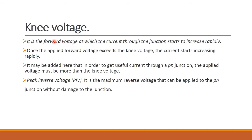Next, knee voltage. It is the forward voltage at which the current through the junction starts to increase rapidly. The main thing to remember is: breakdown voltage is the reverse voltage and knee voltage is the forward voltage. Another important term is peak inverse voltage — it is the maximum reverse voltage that can be applied to the P-N junction without damaging the junction.